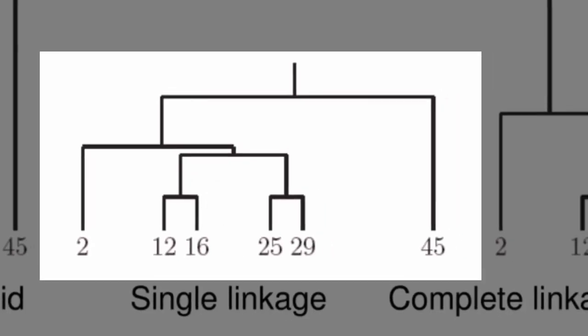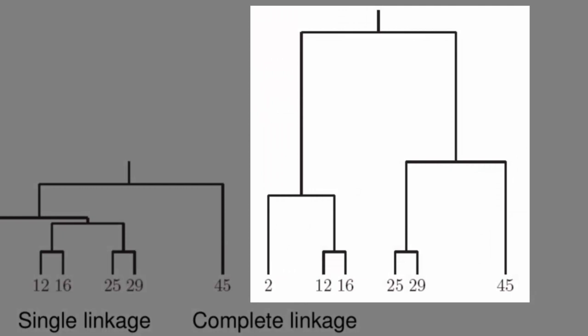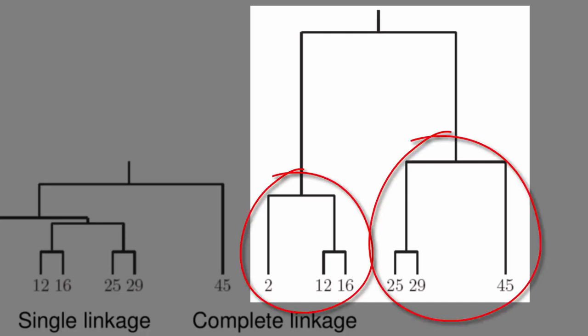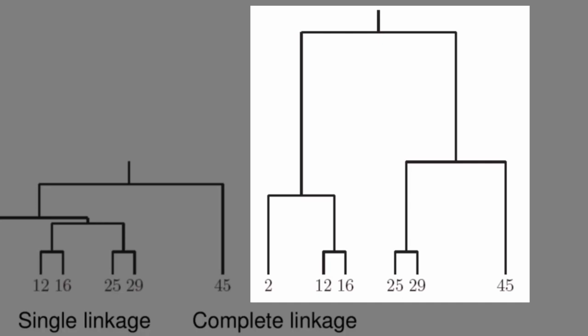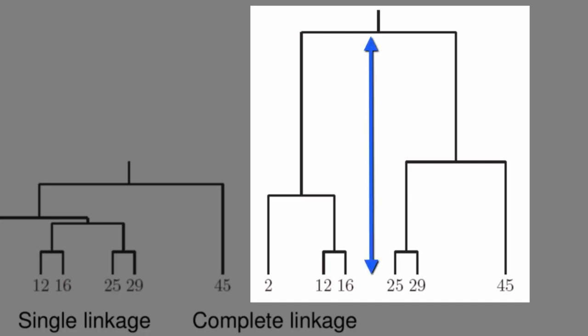The height of the dendrogram represents how different two clusters are. Using complete linkage, you get a totally different representation. {12, 16} are merged together and then merged with the value 2, just like with the centroid method. But instead of adding the group {25, 29} next, under complete linkage the closest match for that merged cluster is the value 45. The distance between the two resulting clusters is based on the furthest values — 45 and 2 are the two furthest points, giving a distance of 43, represented by the height of the dendrogram when those two clusters are merged.